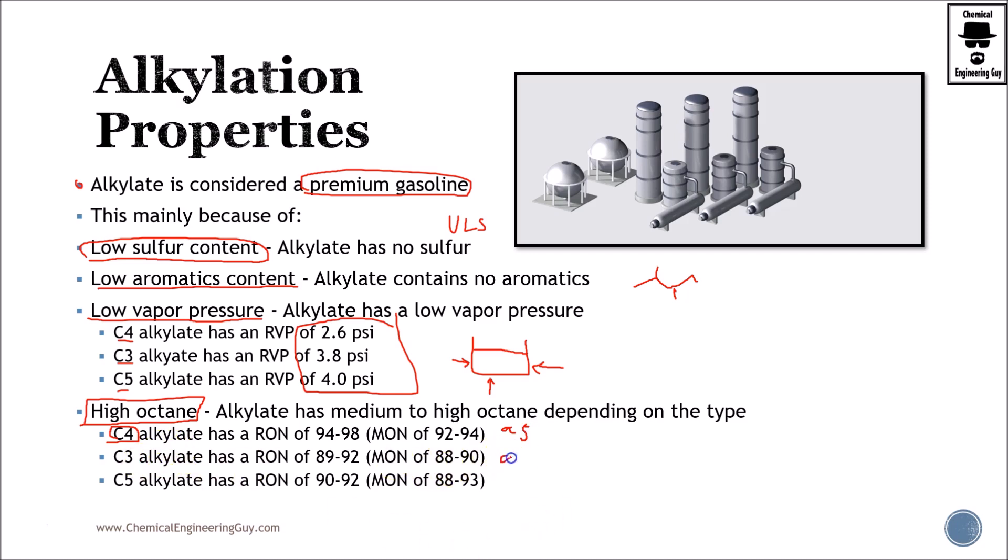Whereas the C3 will have a lower octane rating of about 90, and C5 will also have something around 90. That's why we prefer the C4 alkylate, or isobutane plus the olefin reacting to form isooctane and other materials.